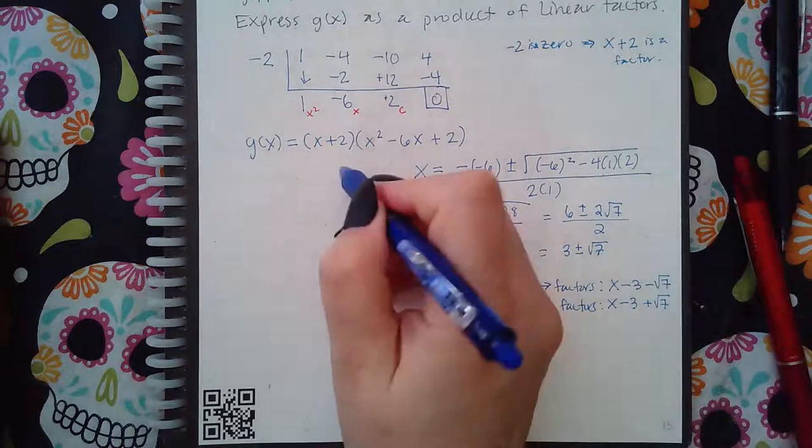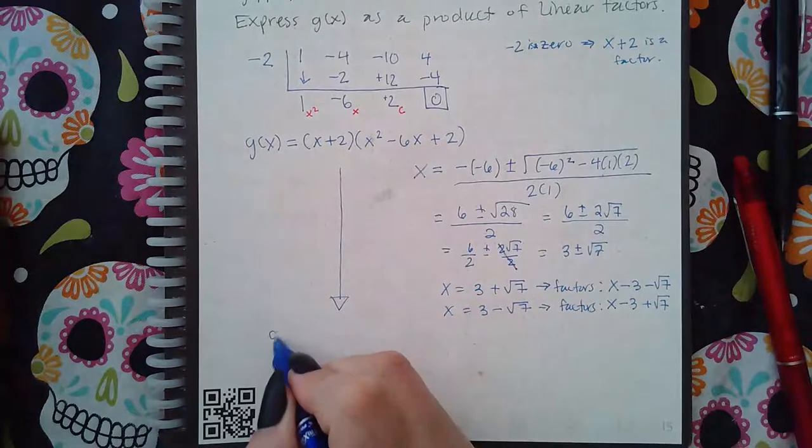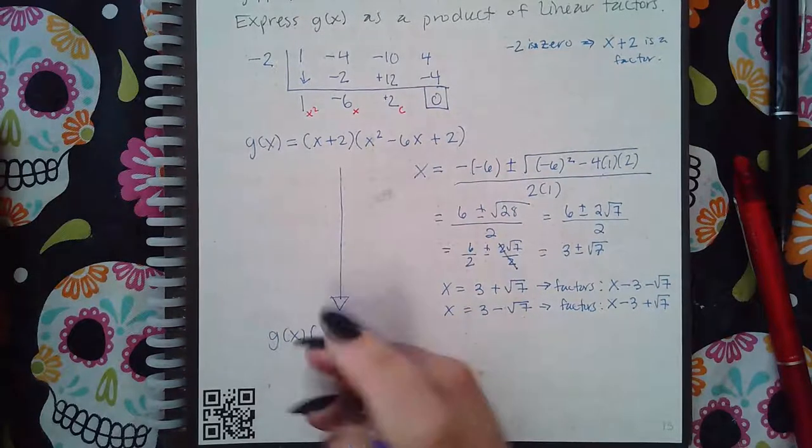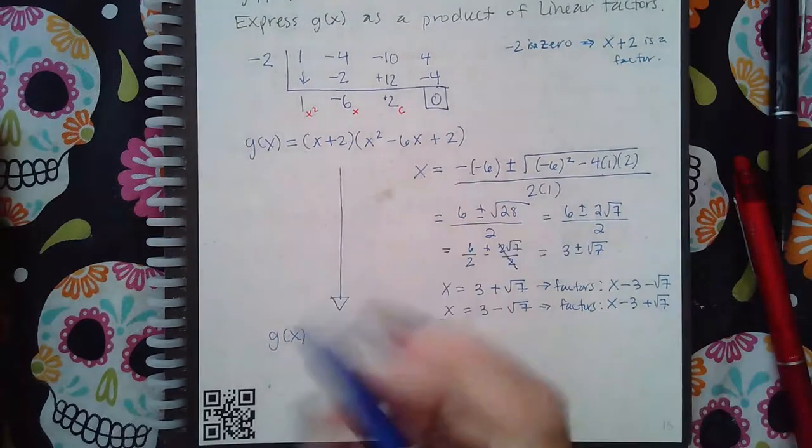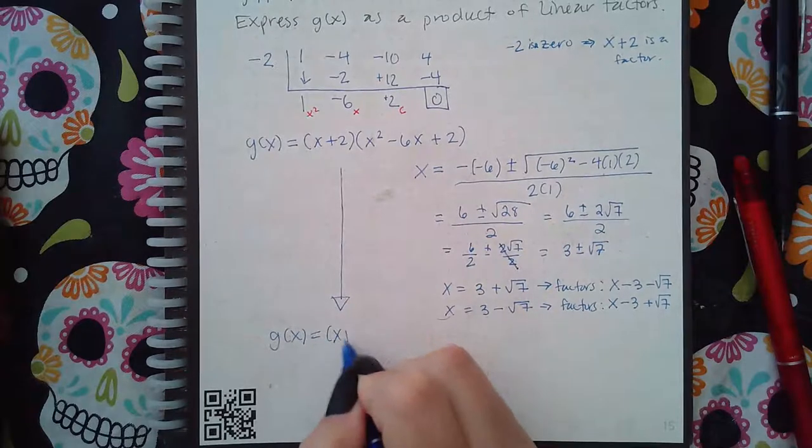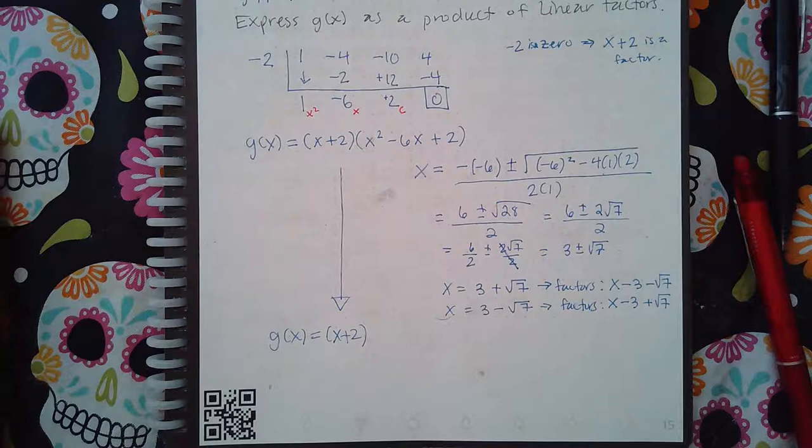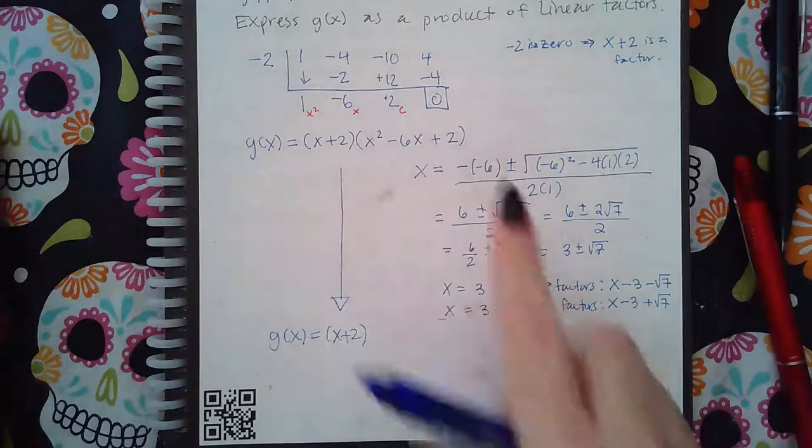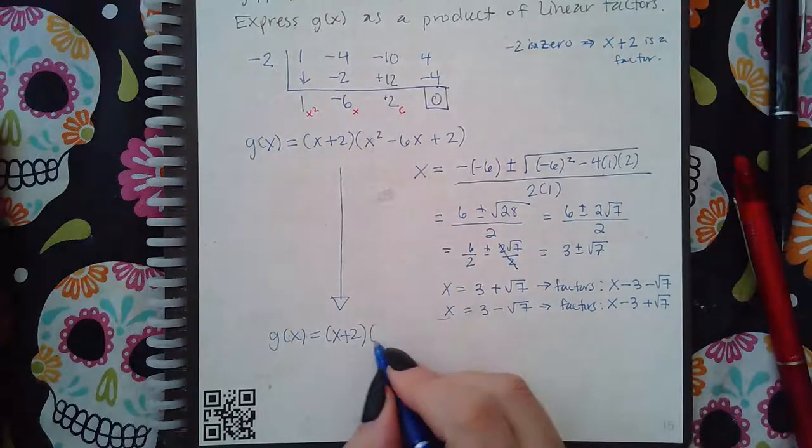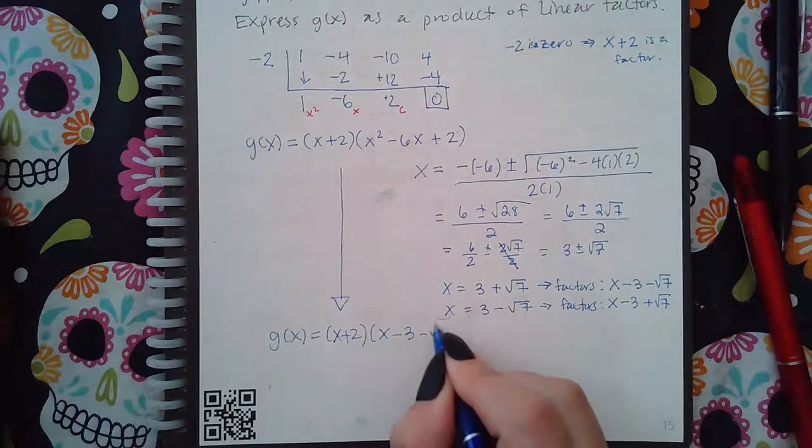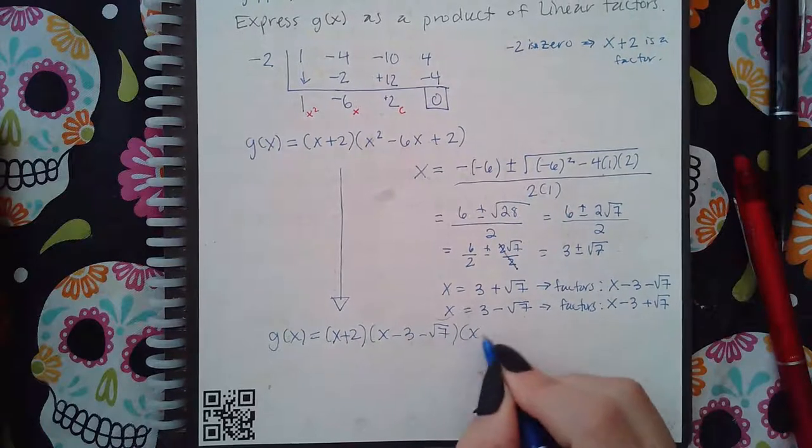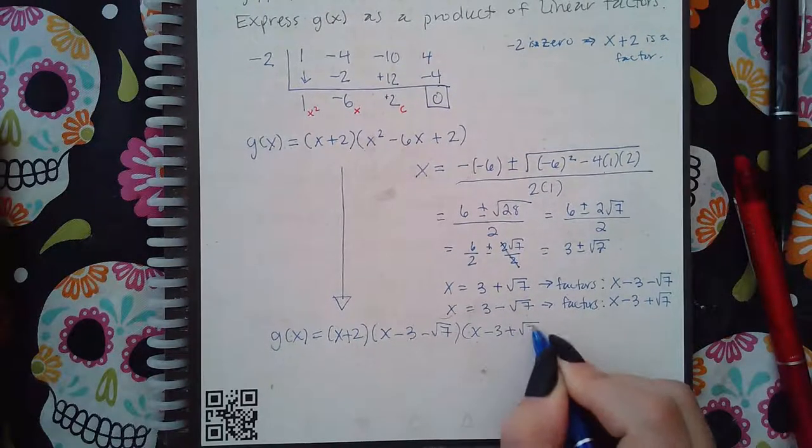So then when I come down here, factor the entire polynomial, I'm going to have x plus 2, which was the first factor that they told me about. They just told me the value and not the actual factor. I had to put that together. And then from this factor, we got these two guys. So x minus 3 minus square root of 7, and x minus 3 plus square root of 7.